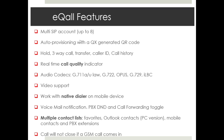It has a real-time call quality indicator. All your basic codecs: G711, ALaw, MULaw, G722, Opus, G729, ILBC. It also has video support and works with your phone's native dialer on your mobile device. It has voicemail notification, PBX do-not-disturb and call forwarding options to toggle on or off. You can have multiple contact lists — favorites, Outlook contacts with the PC version, mobile contacts, and PBX extensions.